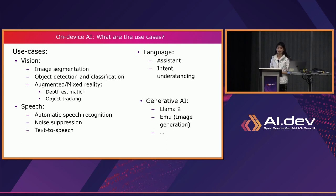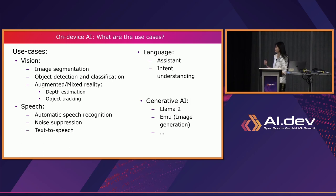Generative AI is definitely a hot topic today, and we are working on it. LLMs are one of our focuses, and we are also looking into other models like EMU for image generation. The generative AI use cases overlap with the other three categories, but we list it separately because of its uniqueness — usually larger models and more compute-heavy workloads.